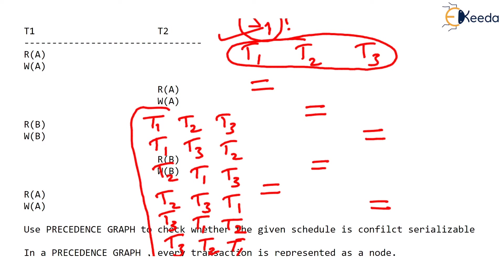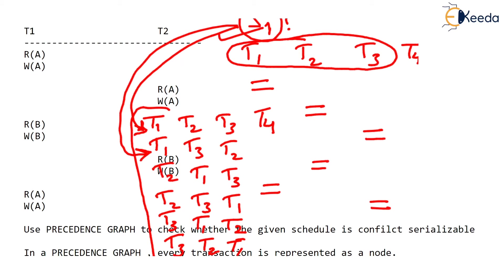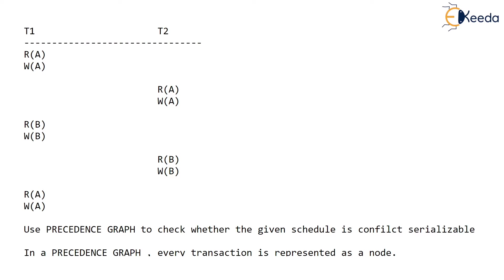Imagine if we were given four transactions interleaved concurrently and asked: is this schedule conflict serializable? With four transactions we have four factorial — 24 — possible serial schedules to check. You'd have to check each one: is S1 conflict equivalent with the first serial schedule? No. Second? No. And so on. After checking all serial schedules you get the answer. This is too difficult. So do you have any better method?